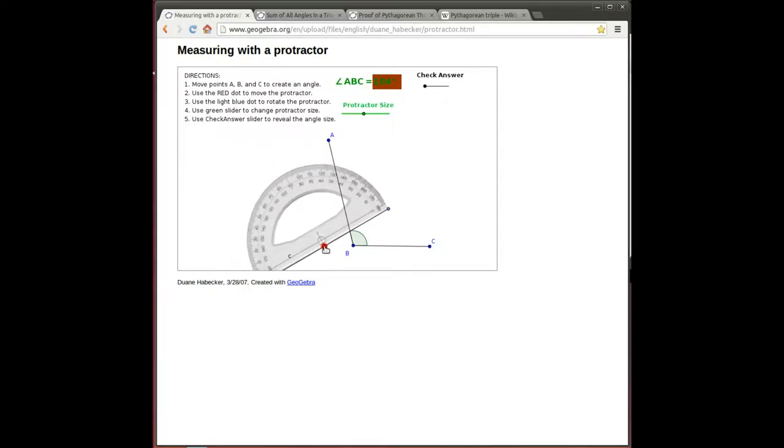Here's how a protractor works. You move that center point of the protractor to the vertex of the triangle and carefully align one edge with one of the sides of the angle, one of the rays making up the angle, and then count the number of degrees. In this app produced by Dwayne Habaker, it's a GeoGebra app, he shows us what the angle measure is and lets us use the protractor to calculate that amount.